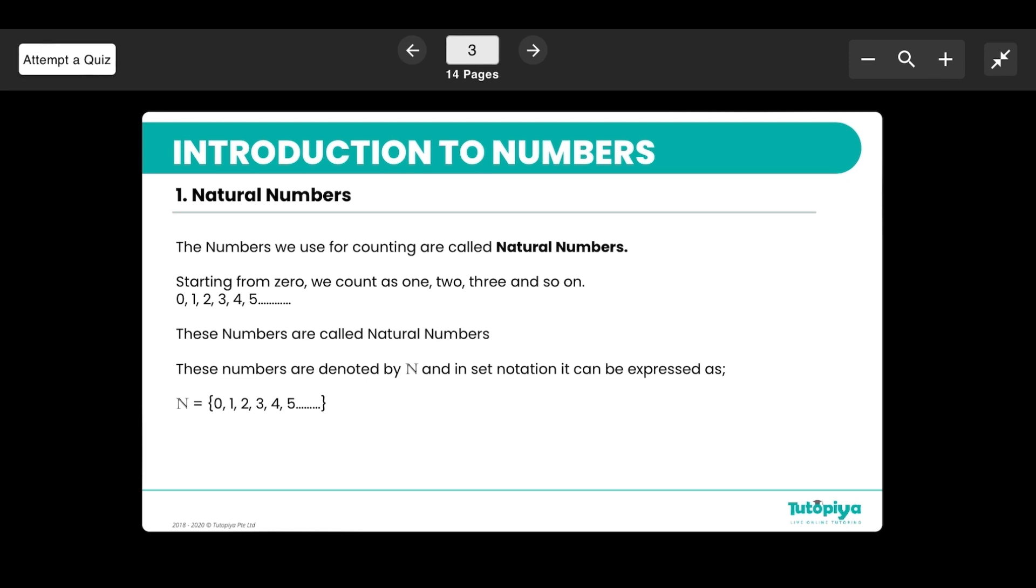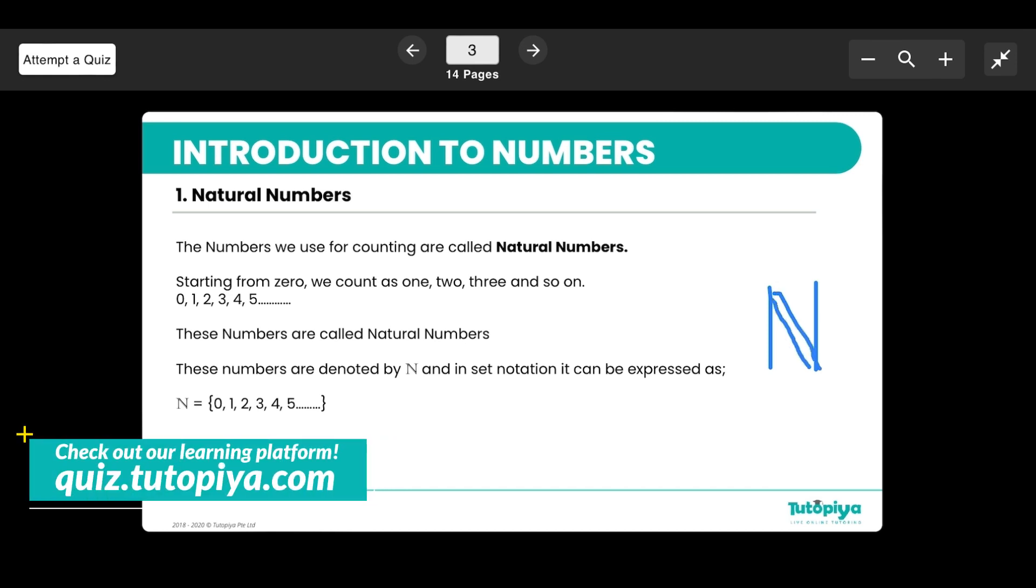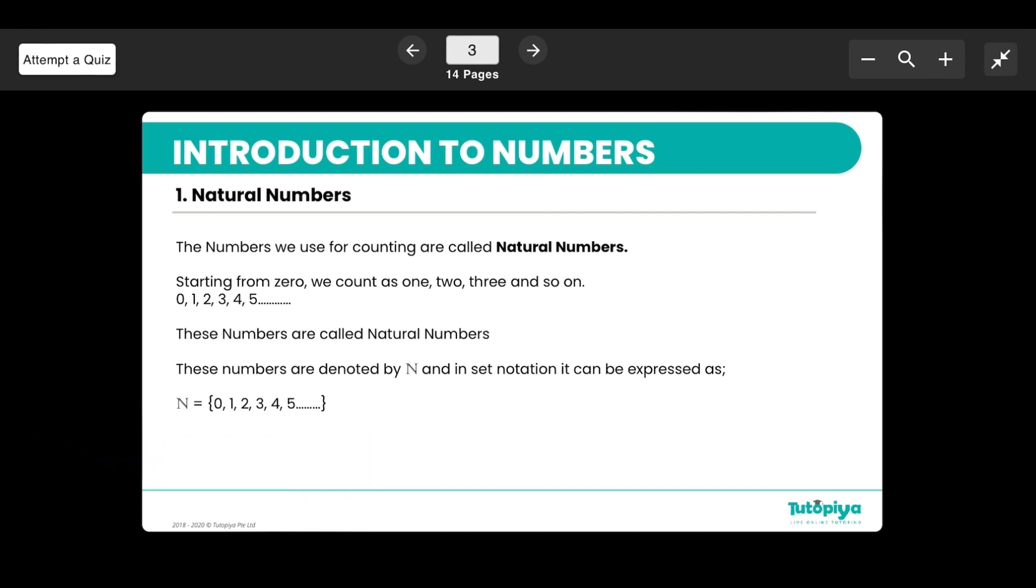Just to start off we're going to look at natural numbers. This is probably one of the earliest type of numbers that you would have come across in math. When you were a toddler your parents would have asked you to count from one and that's exactly what these are. We call them counting numbers. So we start from one, two, three, four, five and they do include zero so that's an important thing you have to remember and we often denote natural numbers with an N and you would see that there's a double line going in the middle like that.